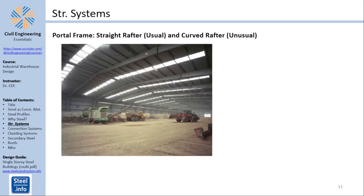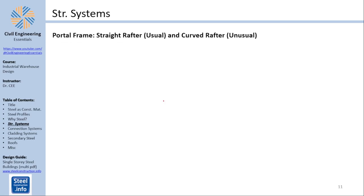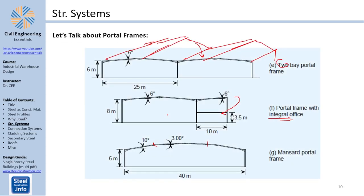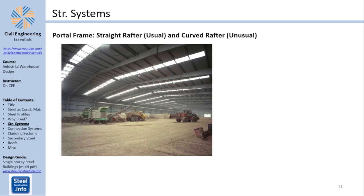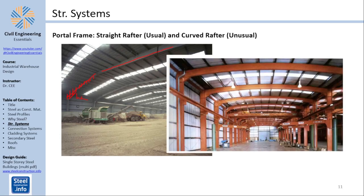For portal frames you have straight rafters. Those beams here are called rafters. You usually have straight rafters. Those rafters could get thicker as you approach the column or not. Usually they get thicker near the column by something called a haunch. You could have curved rafters where the entire beam is being designed to be curved. I will be focusing on straight rafters as this is more straightforward.